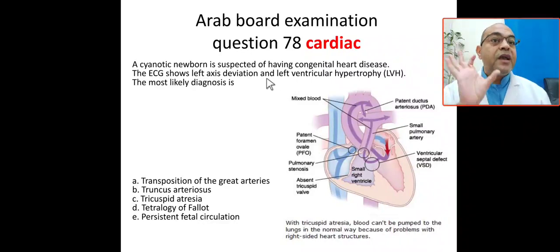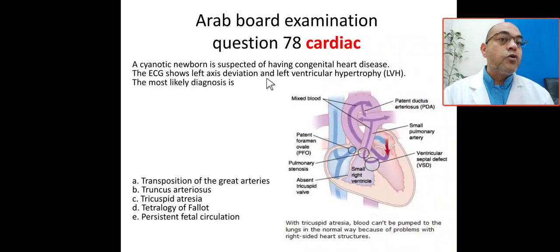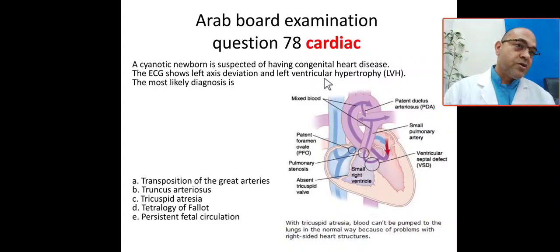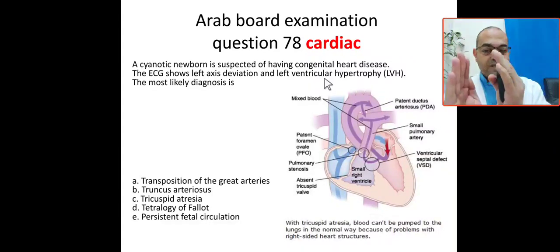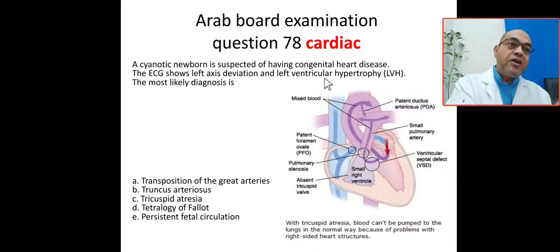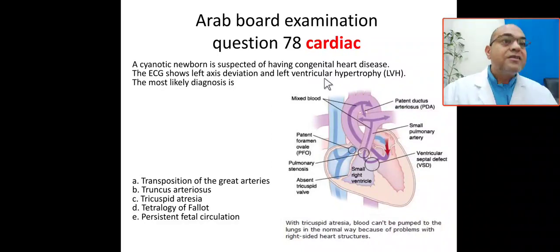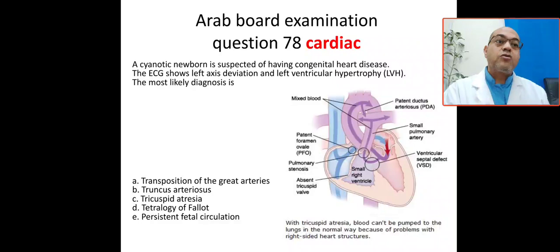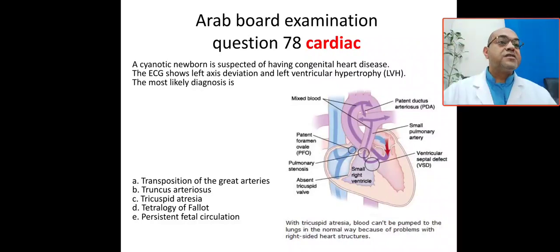The ECG shows left axis deviation with left ventricular hypertrophy. So what is the most likely diagnosis? Put in your mind: cyanosis with left axis deviation and left ventricular hypertrophy — this is tricuspid atresia.